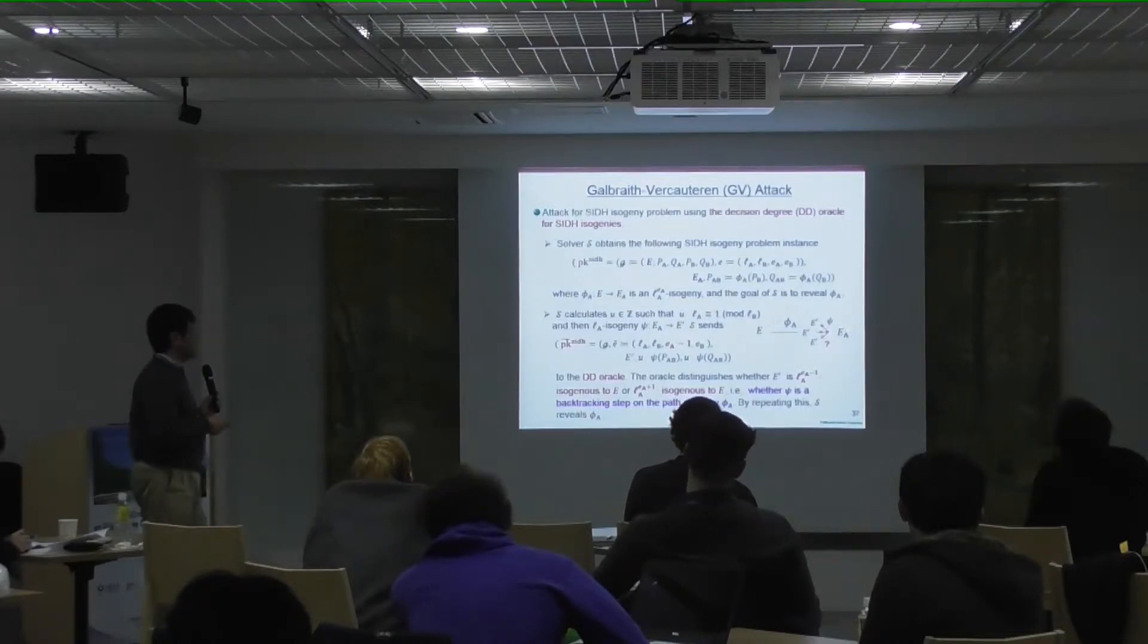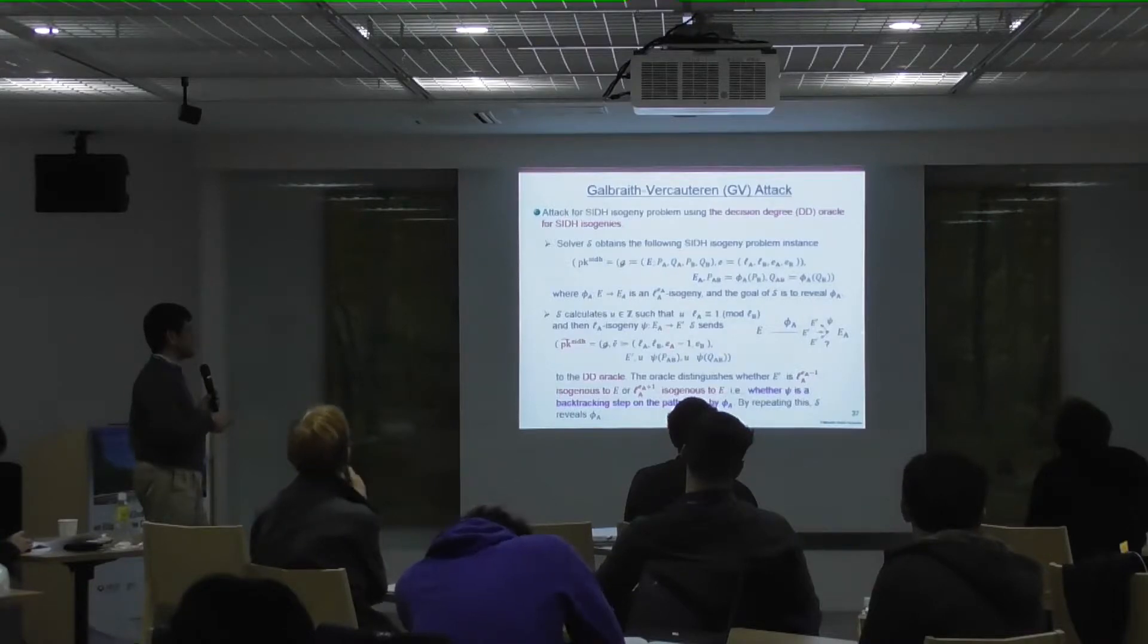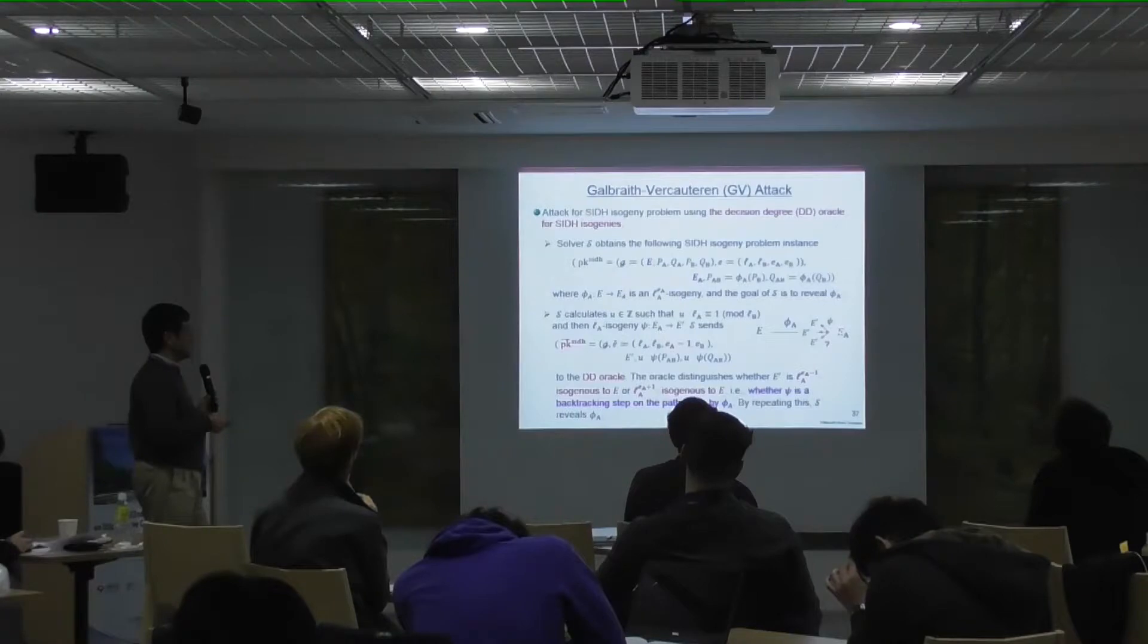I will explain Galbraith's private-only-type attack here. Now E and EA, our target is compute isogeny between E and EA. The attack first backtracks from this EA. For example, MA is two. So that three edges from phiA to the next phiA-1.